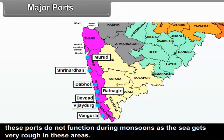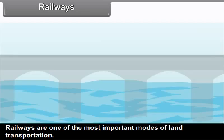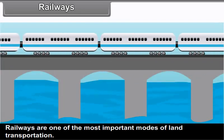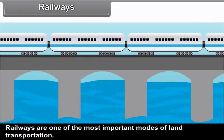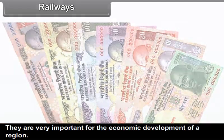Some of the minor ports are Srivardhan, Daphol, Devgarh, Ratnagiri, Vijayadurg, Murud, Vengurla, etc. These ports do not function during monsoons as the sea gets very rough in these areas.